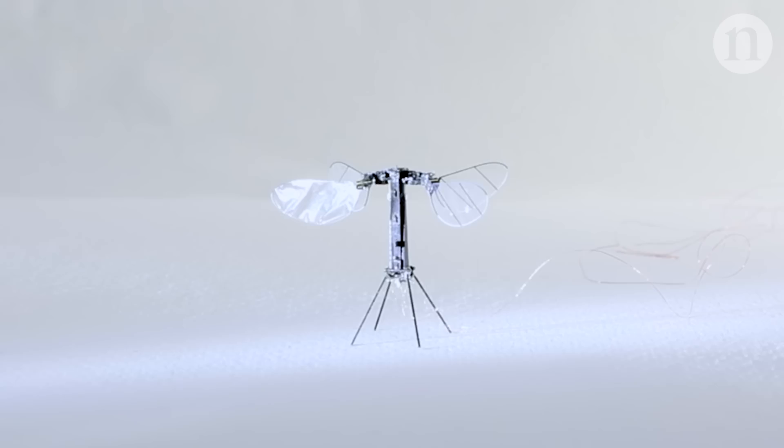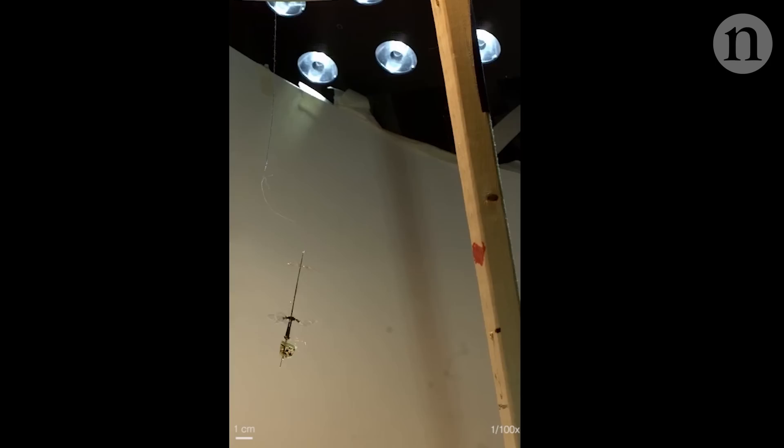This is Robo-B X-Wing. It's got a wingspan of just three and a half centimetres, and it's about a quarter of the weight of a paperclip.